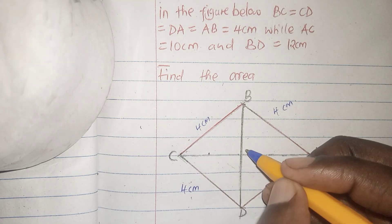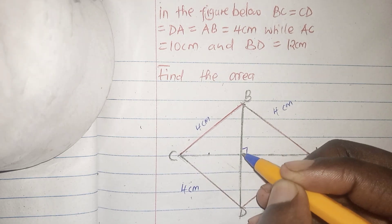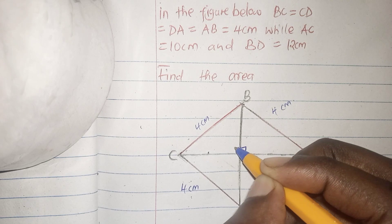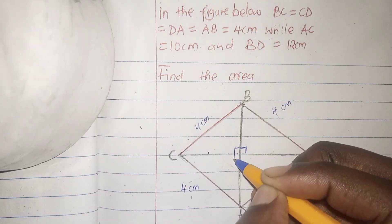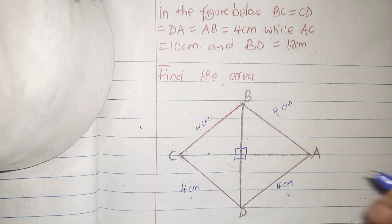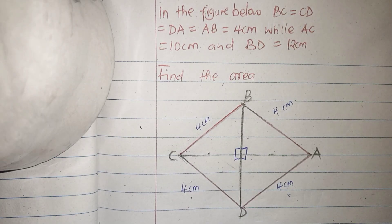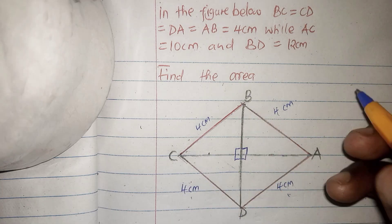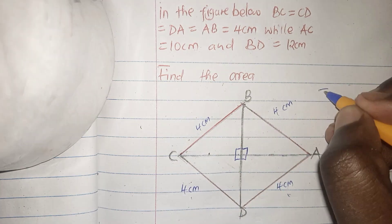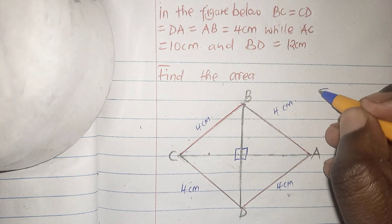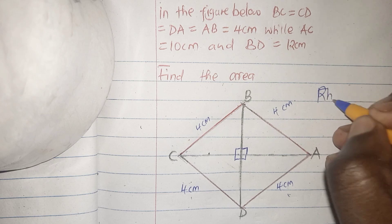The diagonals bisect each other at 90 degrees, so we have 90°, 90°, 90°, and 90°. We can therefore conclude that this figure is a rhombus.